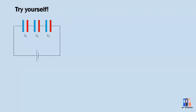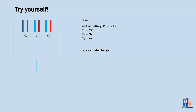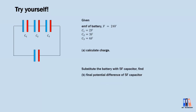Now I'll give you a practice problem based on a similar scenario but replacing the parallel capacitors with series capacitors. Before removing the battery, the EMF is 24 V and the capacitances are 2, 3, and 6 F. First, calculate the total charge on the capacitors. Then remove the battery and replace it with an uncharged 5 F capacitor. Find three things: the final potential difference across the 5 F capacitor, the charge on each capacitor, and the potential difference across C₁, C₂, and C₃. I'll provide the answer a few days after the video — try it yourself and share your answer in the comment section for further discussion.